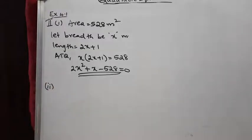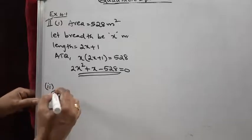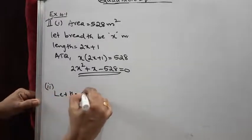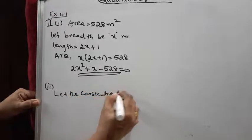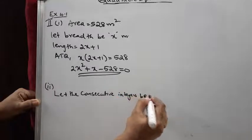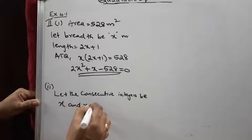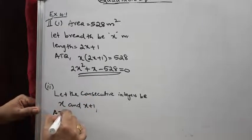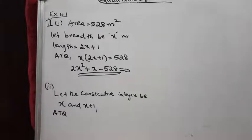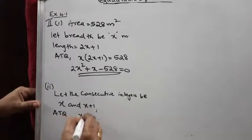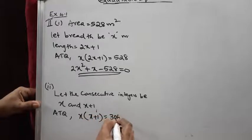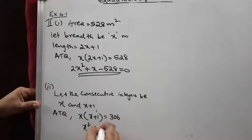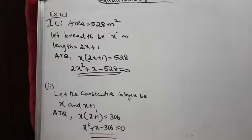Next question: the product of two consecutive positive integers is 306. We need to find the integers. Consecutive integers means next-to-next numbers, like 1 and 2, or 5 and 6. Let the consecutive integers be x and x + 1. According to the question, x(x + 1) = 306. Simplifying: x² + x − 306 = 0. This is the quadratic equation.